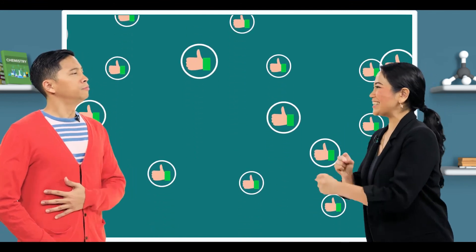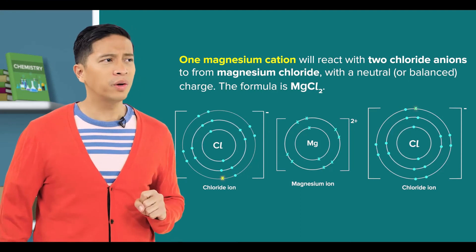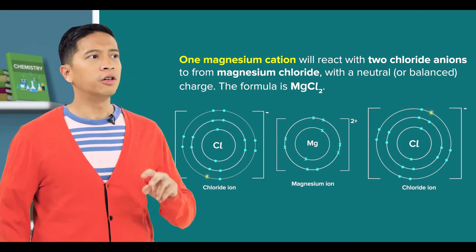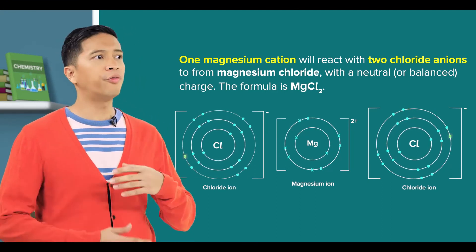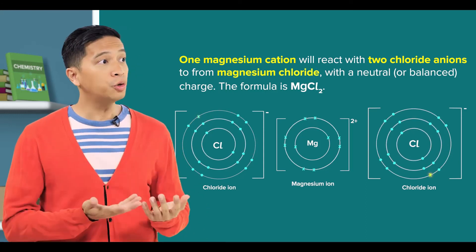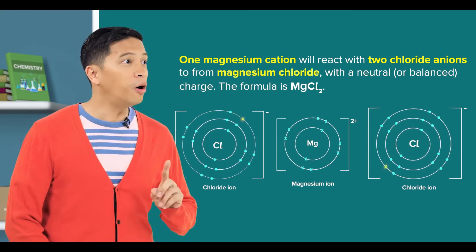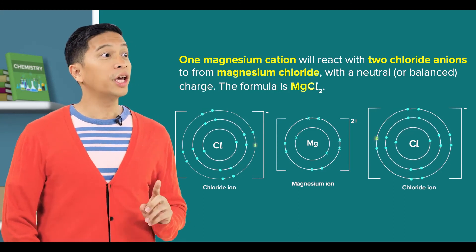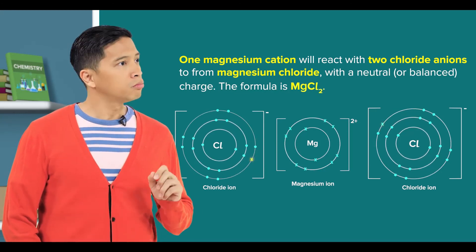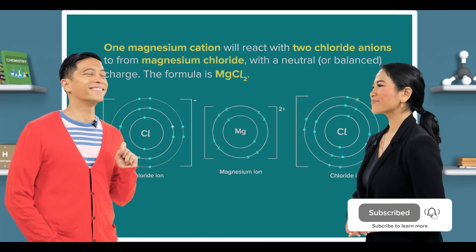Very good! So one magnesium cation reacts with 2 chloride anions to form magnesium chloride with a neutral or balanced charge. The formula is MgCl₂. Am I right? That's correct! Let's try a trickier example.